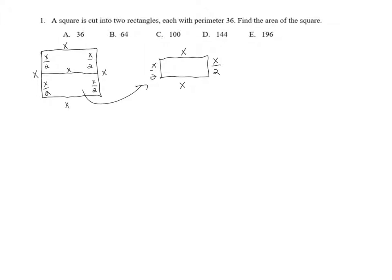We know that the length of this rectangle is x, and the width is going to be x over 2. And we're told that the perimeter of the rectangle is 36. Well, the perimeter is just the sum of the sides.